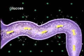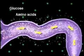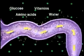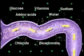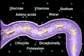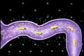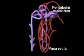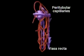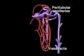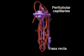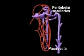These include glucose, amino acids, vitamins, water, sodium, chloride, bicarbonate, and potassium. Blood vessels receiving reabsorbed species are peritubular capillaries, a plexus derived from the arteriole leaving the renal corpuscle.